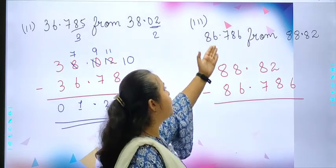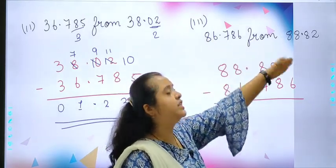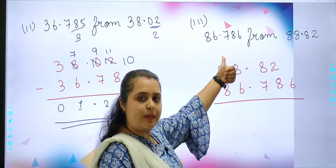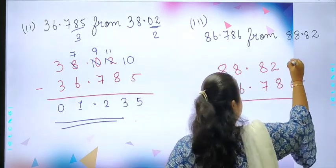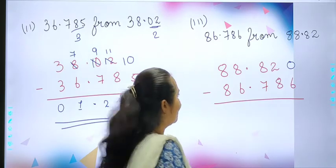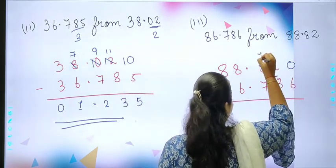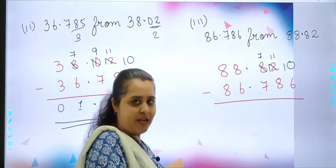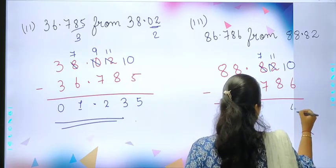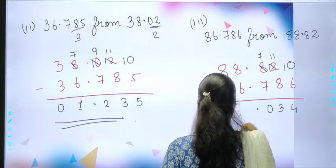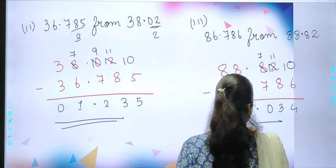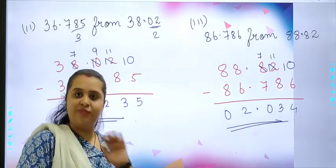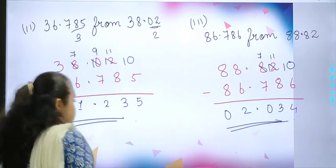Now let's solve the third one. In third question, it is 86.786 from 88.82. As you can see, again 2 decimal places and 3 decimal places. So we will be making it equal by adding 1 zero. This 8 will become 7, this 12 will become 11. 10 minus 6 is 4, then 3, 0, 0, 2. So your answer will be 2.034.